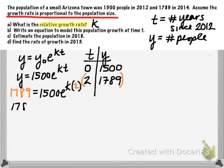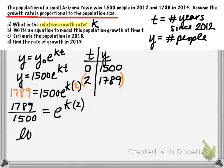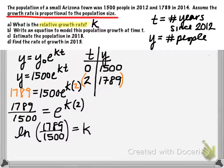We want to isolate the exponential expression by dividing. So divide by 1,500. And then this is an exponential equation that I'll put in log form. So that would be log base e, which I'm going to go ahead and just write as natural log. So this will be the natural log of 1789 divided by 1,500 is equal to k times 2.